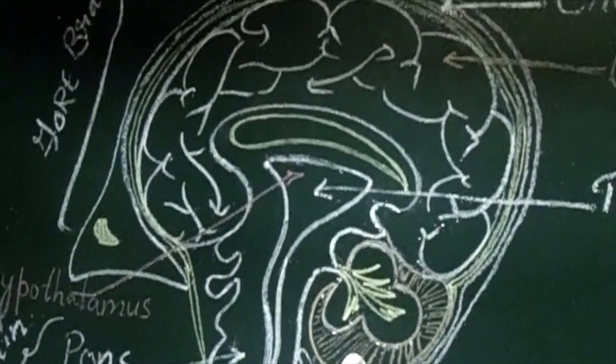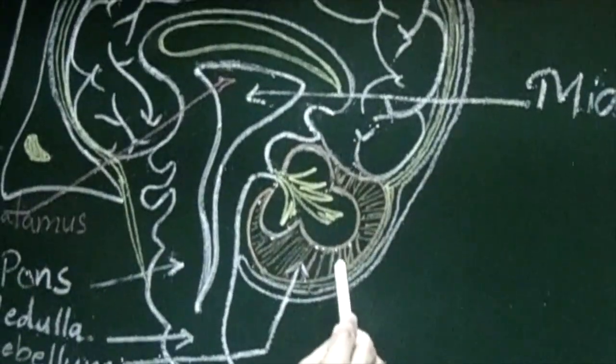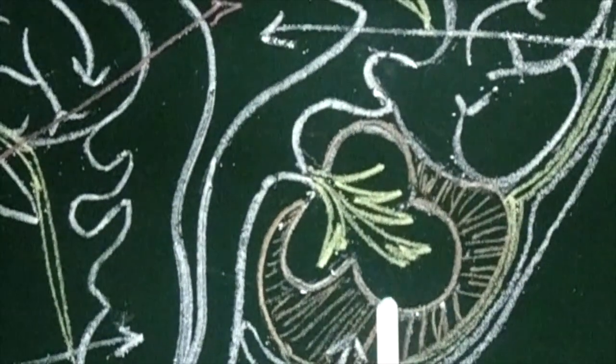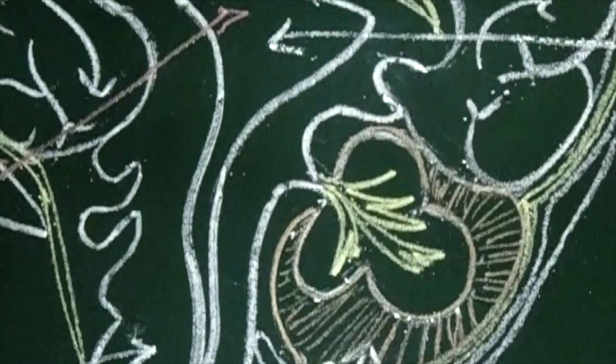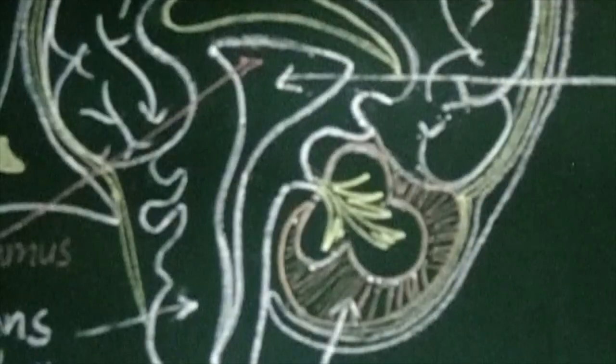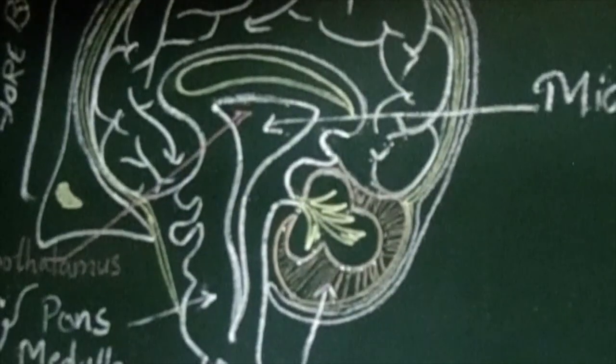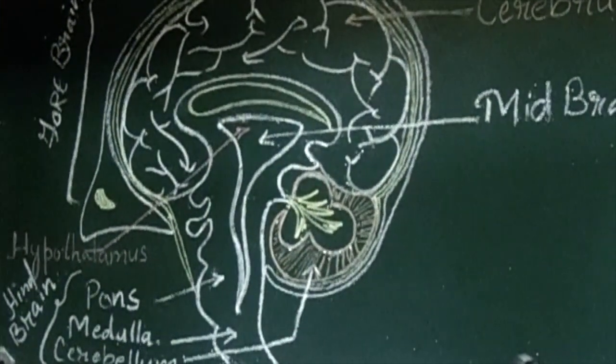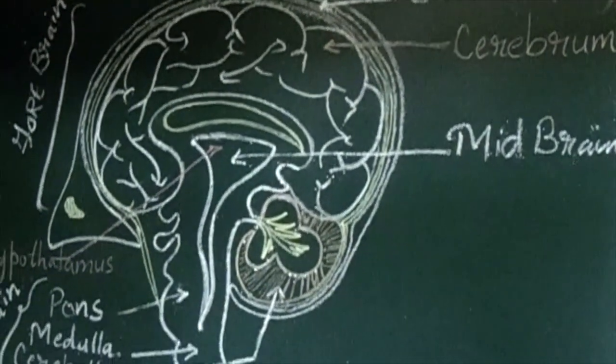Cerebellum is the second largest part of the brain. It is responsible for voluntary actions such as maintaining the posture and equilibrium that is balance of the body. It coordinates and controls the movement of muscles in actions like walking in a straight line, running, riding a bicycle or picking up a pencil, dropping any things. All such activities are controlled by cerebellum.